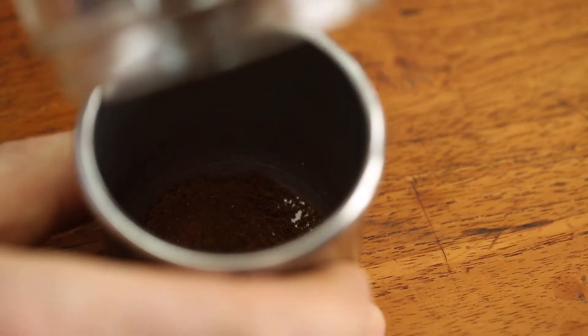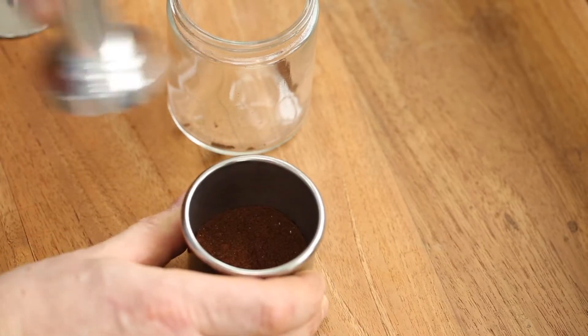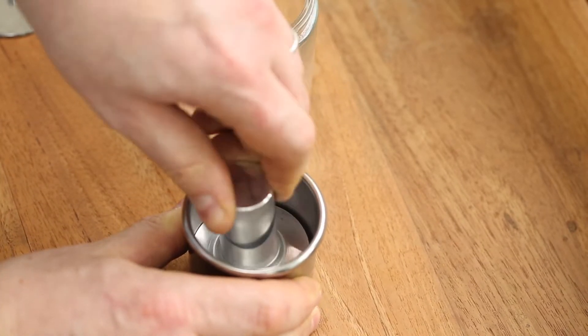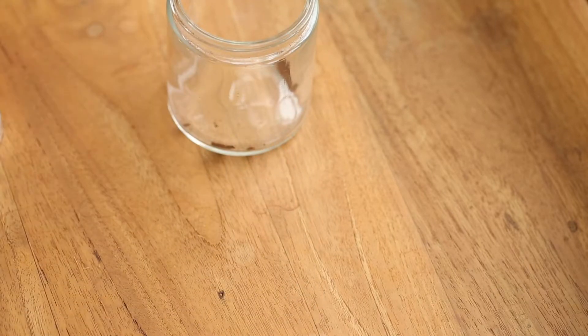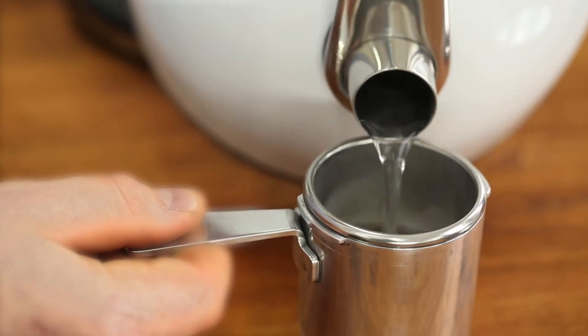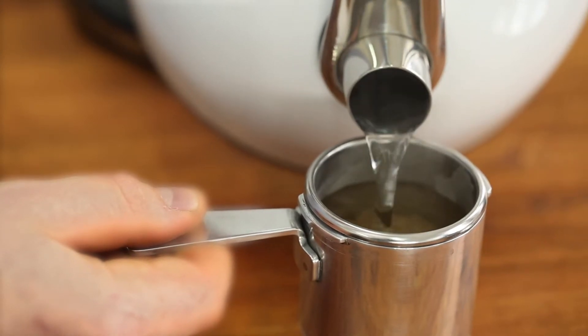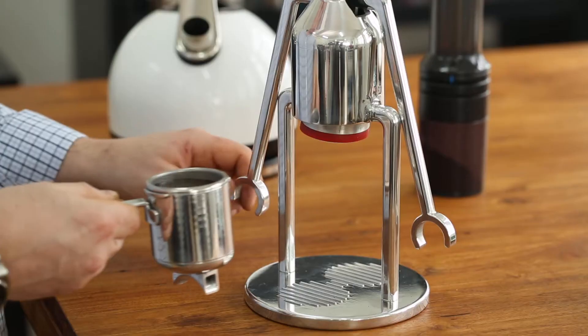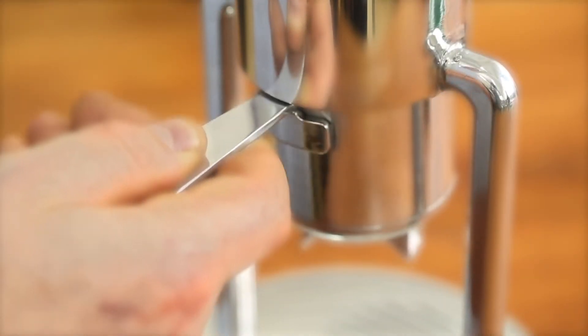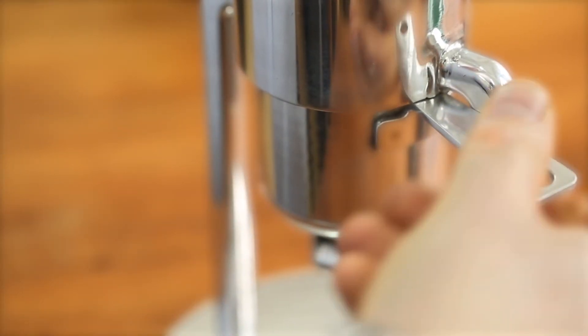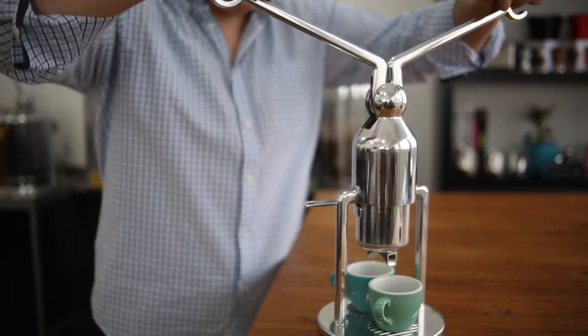Add the coffee to the basket, lever off, and tamp. Place the dispersion screen on top and add hot water from a kettle just off the boil. Lift up the robot arms, insert the portafilter into the machine, and lock it in place.